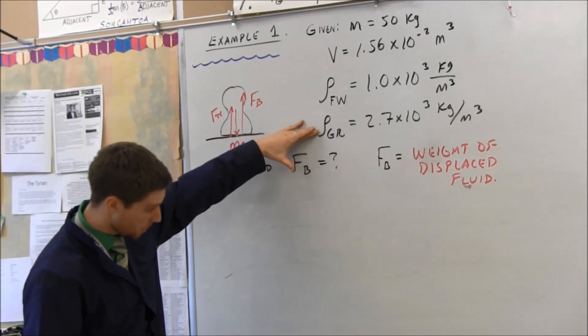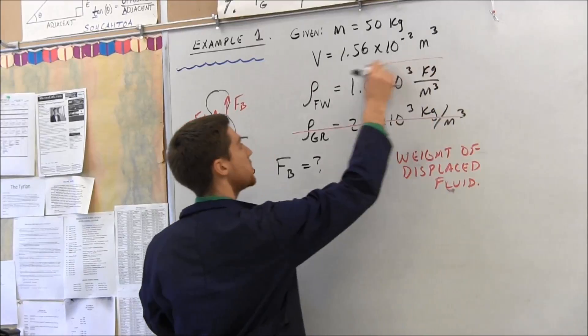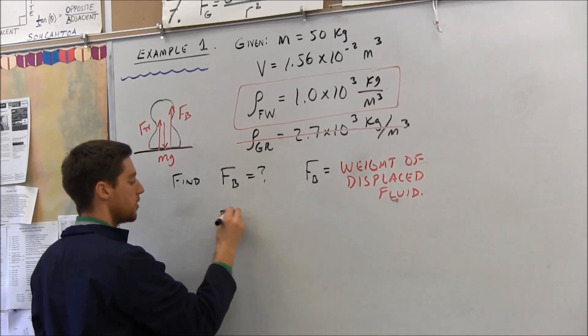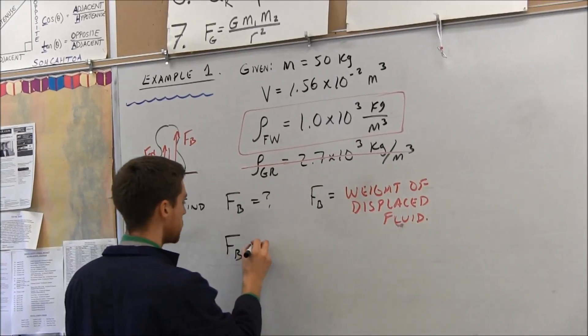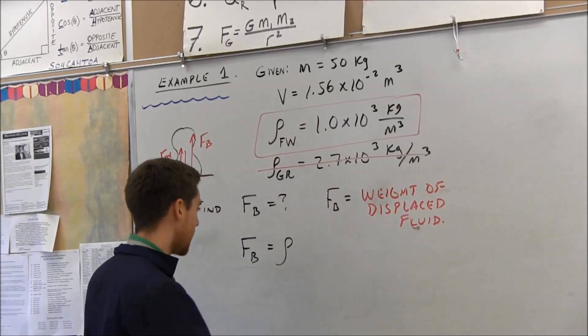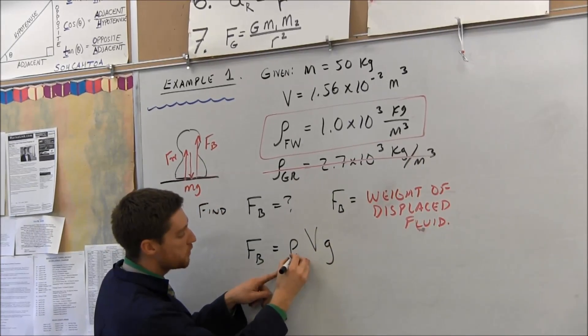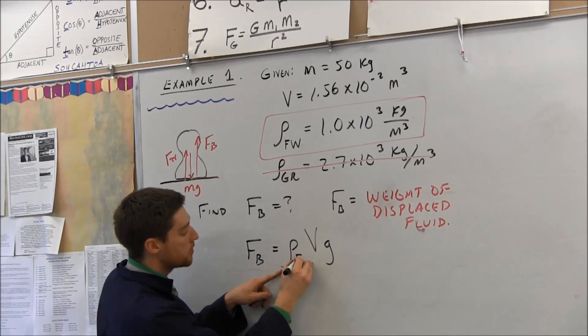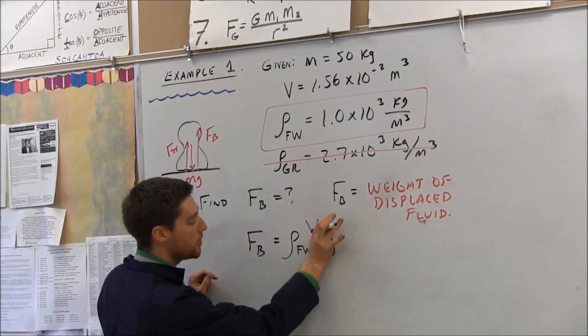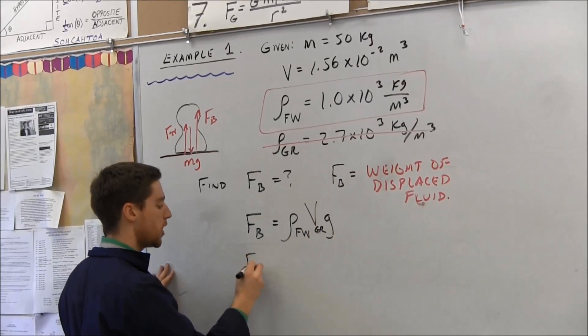When we define buoyant force, you need to know the density of the fluid being displaced. Are we displacing granite? No. So don't worry about this density. It's not being displaced. This is the density that you worry about. Buoyant force is equal to the density of the displaced fluid times the volume times gravity. This is the density of your displaced fluid, so that's going to be the fresh water. This is the volume of the object, the volume of granite.